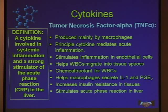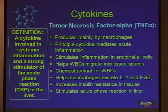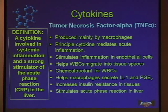TNF-alpha is a chemoattractant for white blood cells. It helps macrophages secrete interleukin-1 and prostaglandin. It increases insulin resistance in tissues and stimulates the acute phase reaction in the liver.